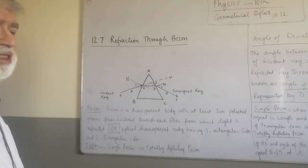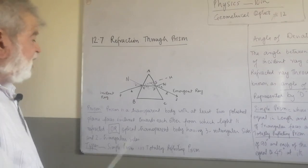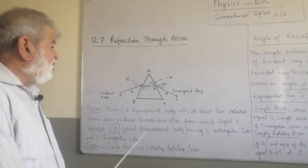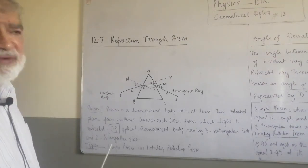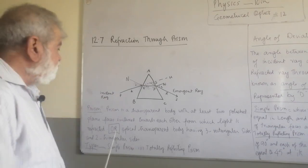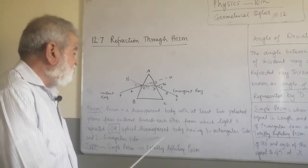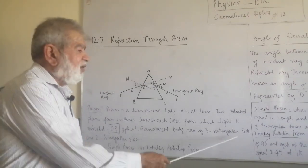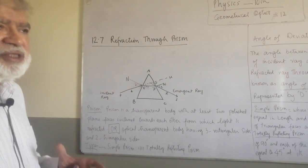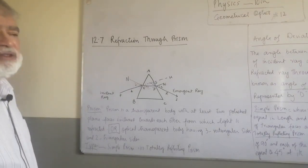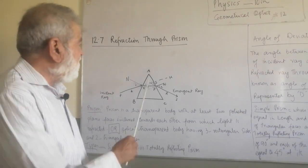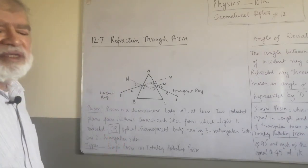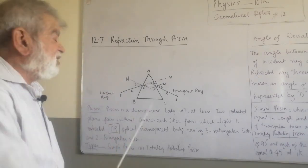This prism is a prism. Optical transparent body - optical means light-related. A transparent body through which light rays can pass, having three rectangular sides and two triangular sides. The front side and back side are triangular, and these sides are rectangular.